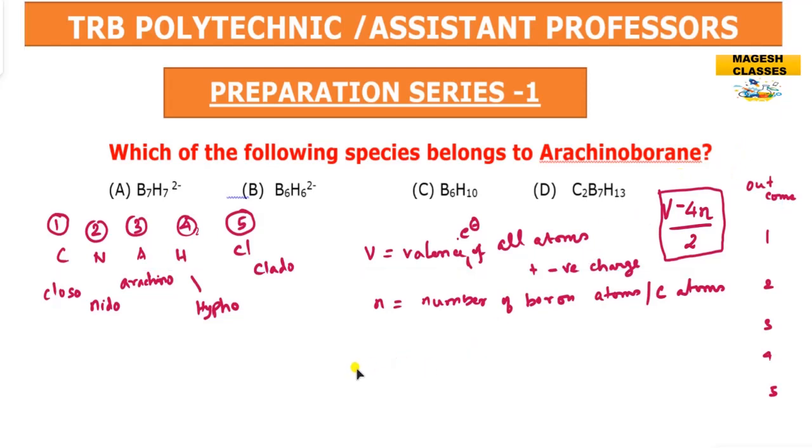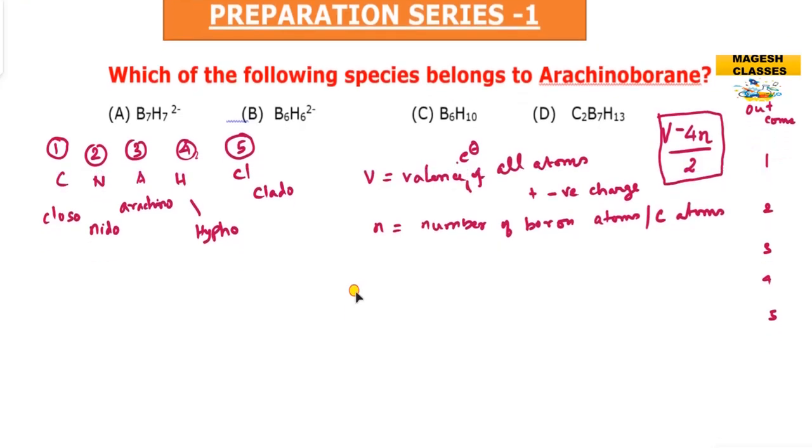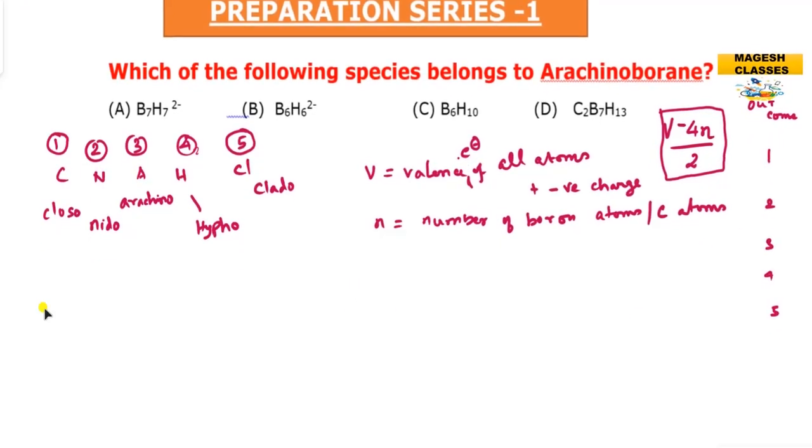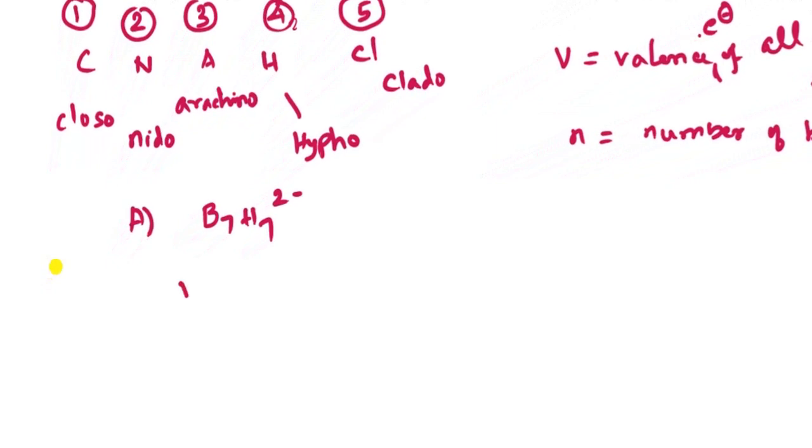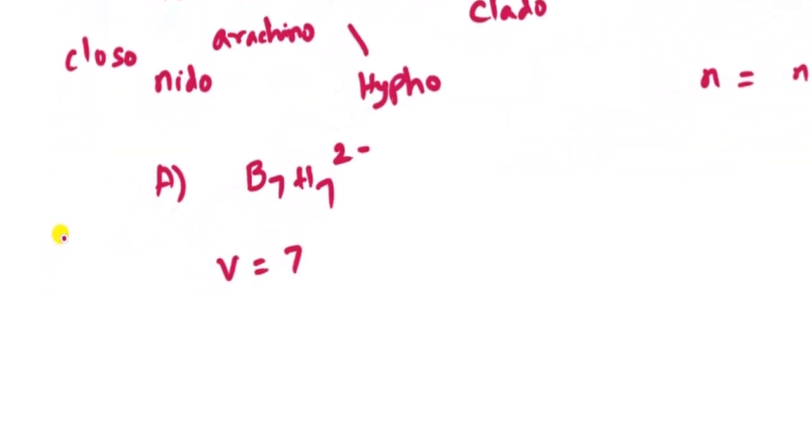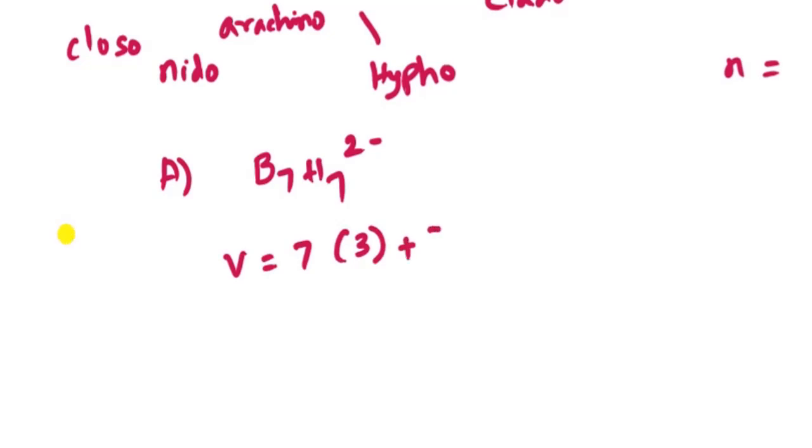In the first case, B7H7 2-minus. What is V? The number of boron is 7, so 7 times 3 equals 21. The valence electron is 1 for hydrogen, so 7 times 1 equals 7. Plus 2 for the negative charge. Total V equals 30. And what is n? n is the number of boron atoms, which is 7.